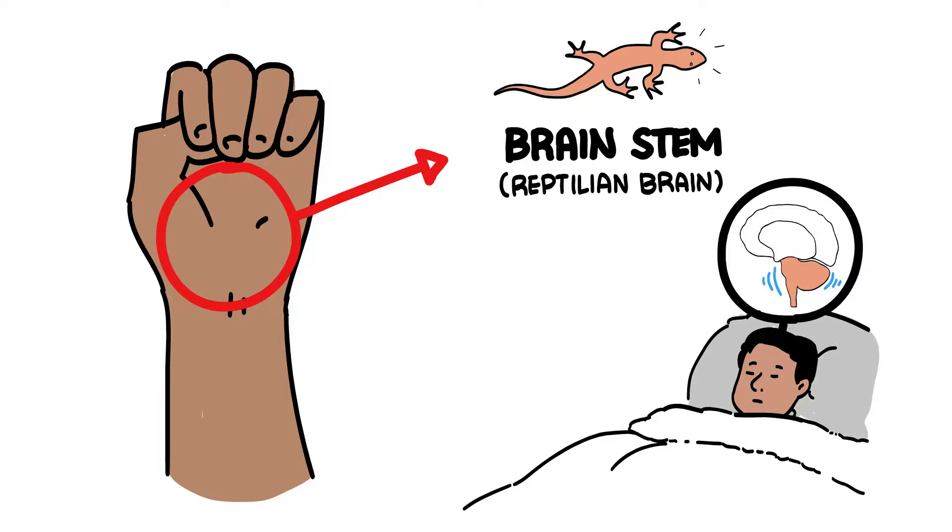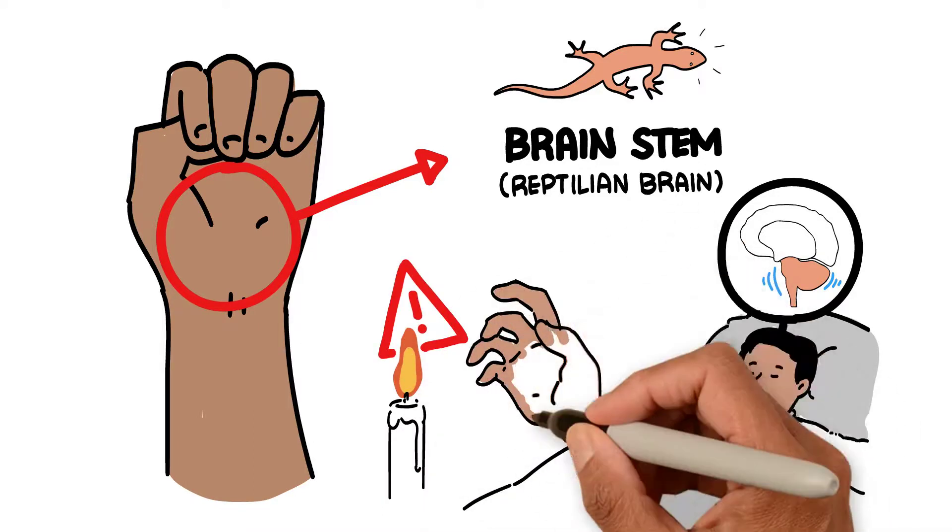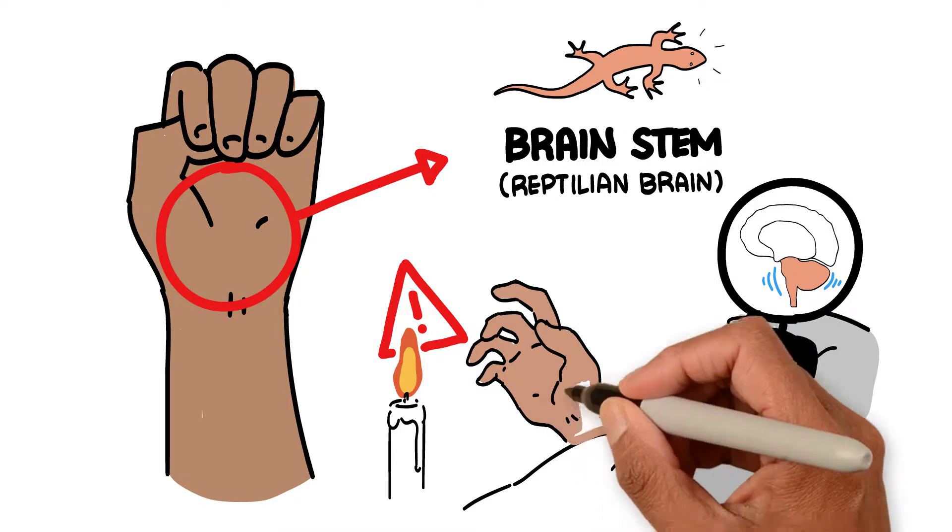It can keep everything going, even if you suffer severe brain damage. Its job is to keep you alive and safe. It's the part that makes you instinctively pull your hand away from a fire, if that's what's needed.